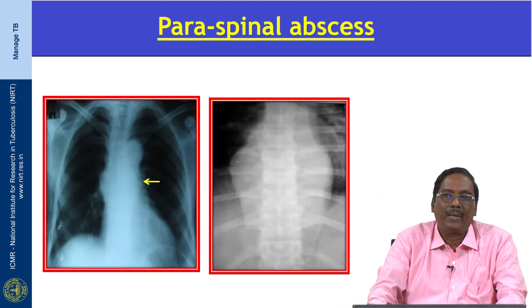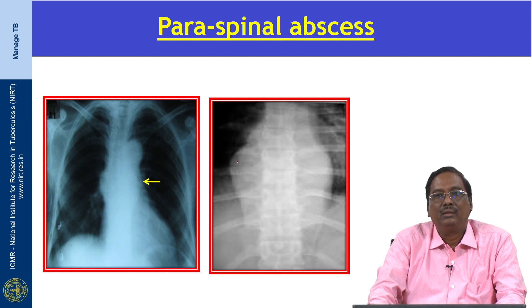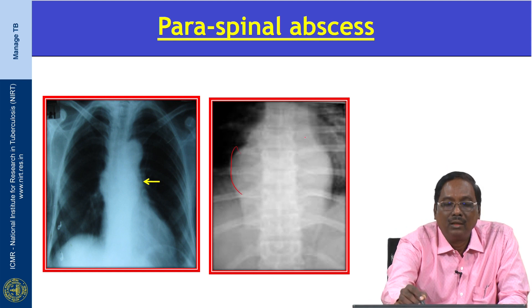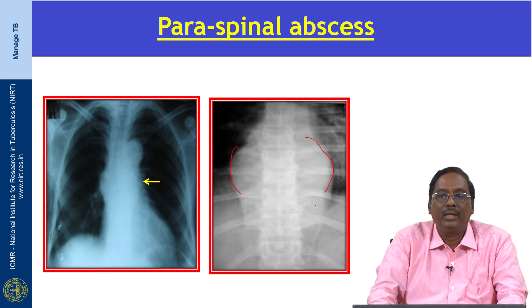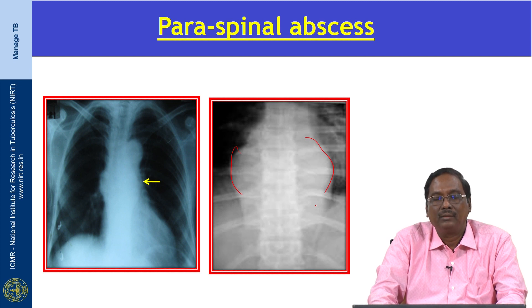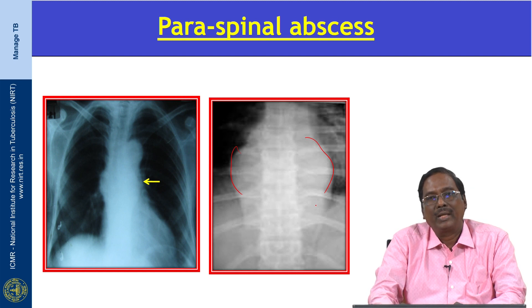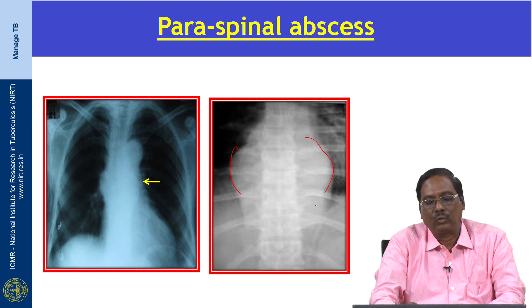This is a paraspinal abscess due to TB spondylitis. It is seen as a fusiform swelling on either side of the spine. The presence of calcification is more in favor of a paraspinal abscess due to tuberculosis.